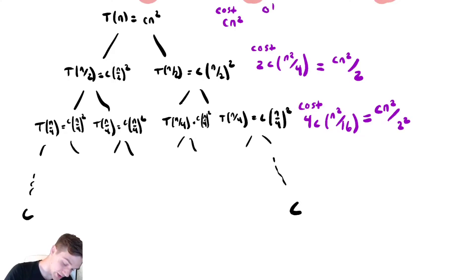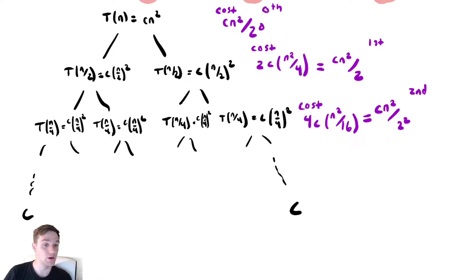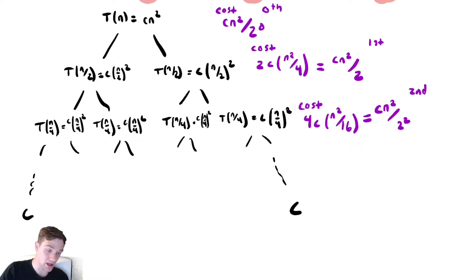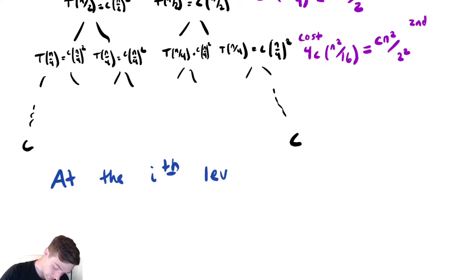Why rewrite the denominator as 2 squared? Because this is the zeroth level, this is the first level, and this is the second level. Getting the level index to appear in the denominator — as 2 to the 0, 2 to the 1, 2 to the 2 — is very convenient. So the pattern is: at the i-th level, the cost is cn squared over 2 to the i.